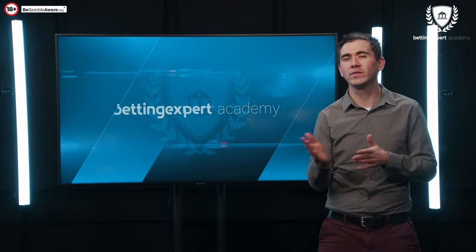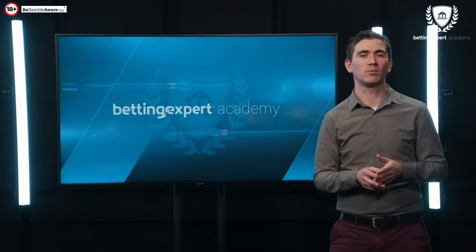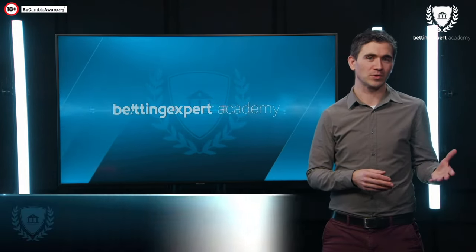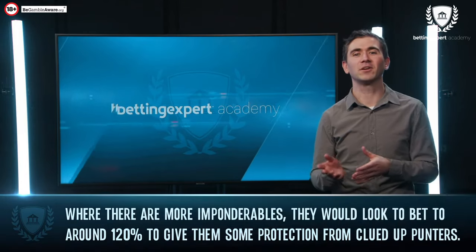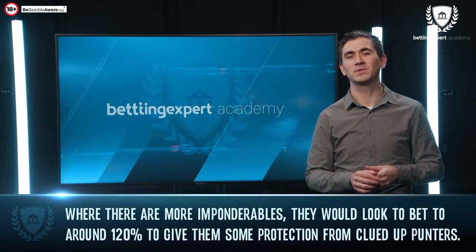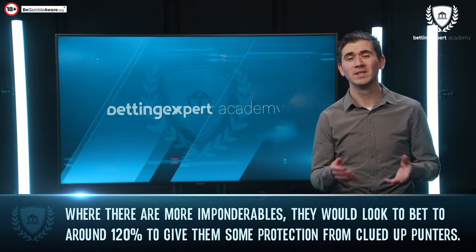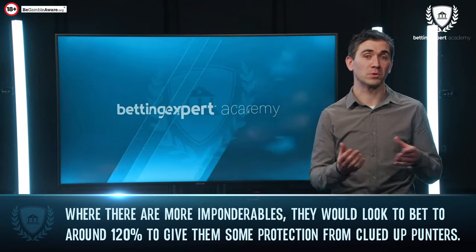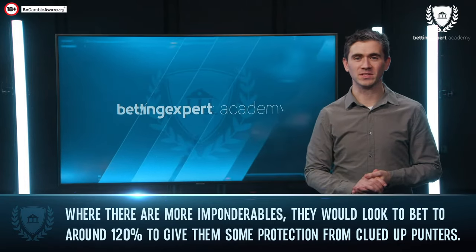Where there are more unknowns, for example a low-grade novice hurdle in horse racing, they would look to bet to around 120% or more to give them some protection from some clued-up punters.